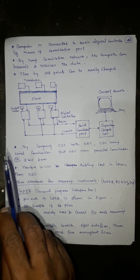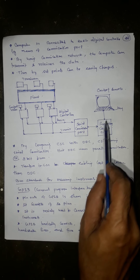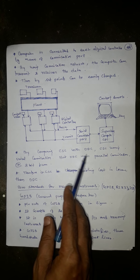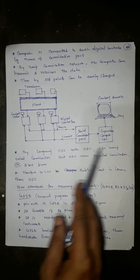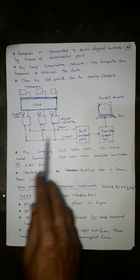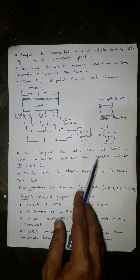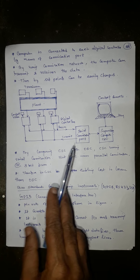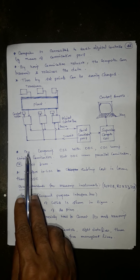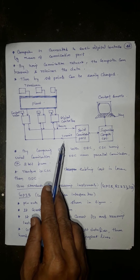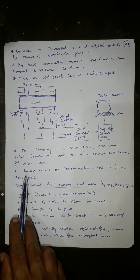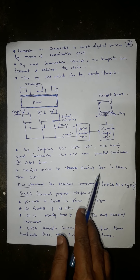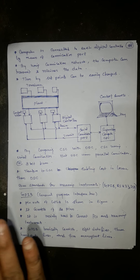Comparing CSE with DDC: CSE uses serial communication, while DDC uses parallel communication. Therefore, the cost of data transmission is lower in CSE. Because serial communication requires fewer cables than an 8-bit parallel bus, the CSE cabling cost is lower than that of DDC.